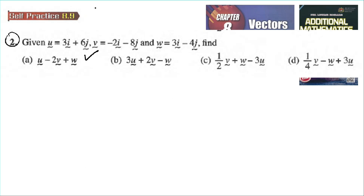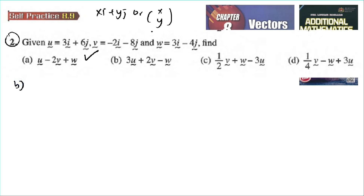Now, a vector can be written as xi plus yj, or as a column vector with components x and y. You can do it either way. For part a I showed how to do it with i and j notation, but for part b I'm going to use the x and y column vector method, which is much easier.